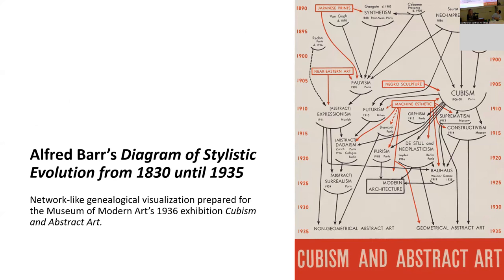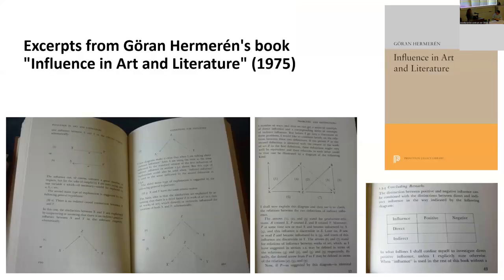It was dissatisfaction with the vague but frequently used category of influence in art history that later led some art historians to criticize "influenciology." As a consequence, attempts were made either to replace influence with a completely different concept, or to construct influence as a rationally verifiable category that would give art historical studies a strictly rational and logical basis. A relatively unique attempt was Gero Hermeren's book published in 1975, which sought to examine influence on the basis of strict logic and semantics. The result was equations, scales, charts, and diagrams intended to capture different types and scales of influence.